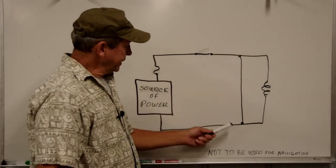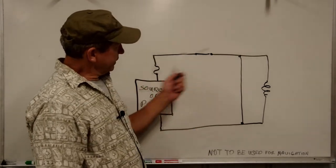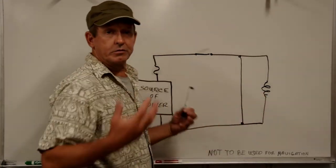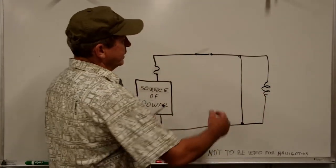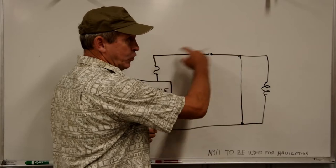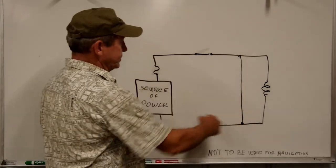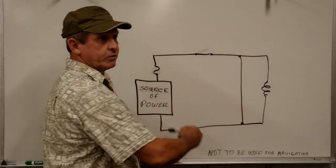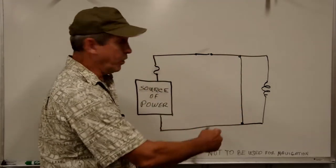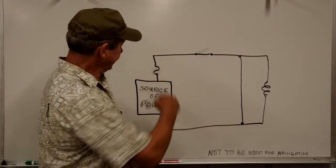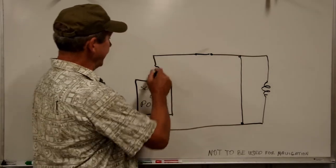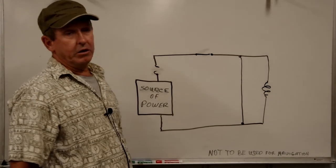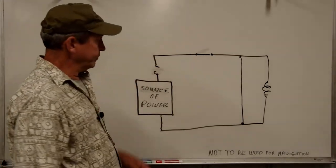There could be the case where there's enough resistance to allow the device to work partially. There could be almost no resistance in this path, in which case more current will flow than what we've designed into this system. And in that case, we should blow that circuit breaker or fuse.